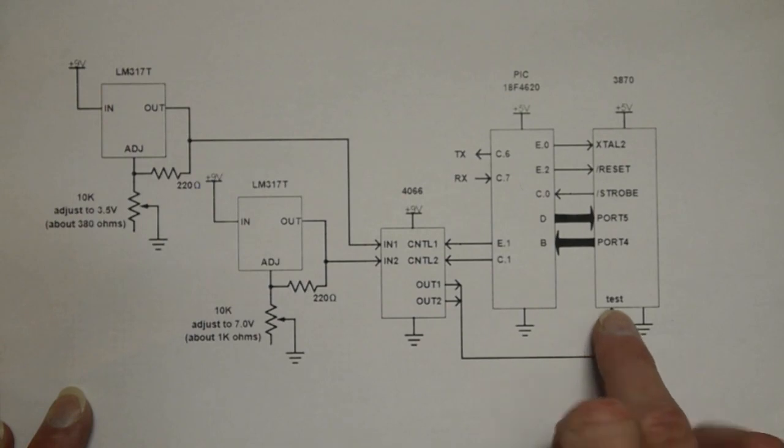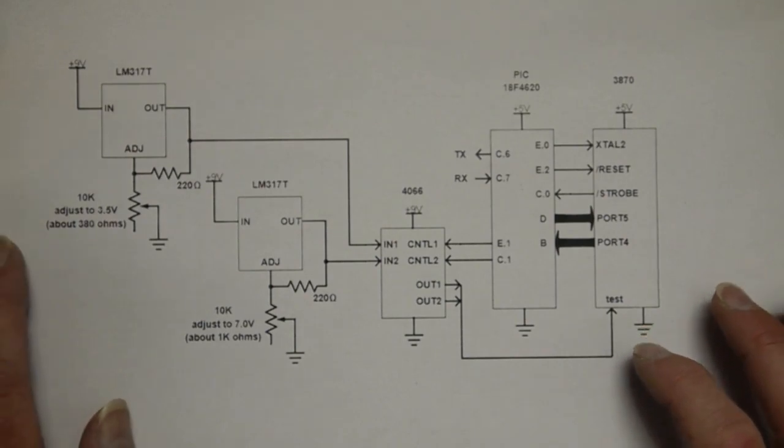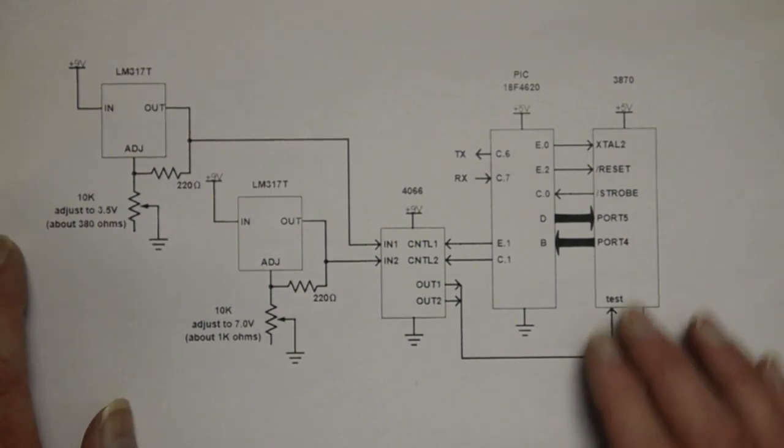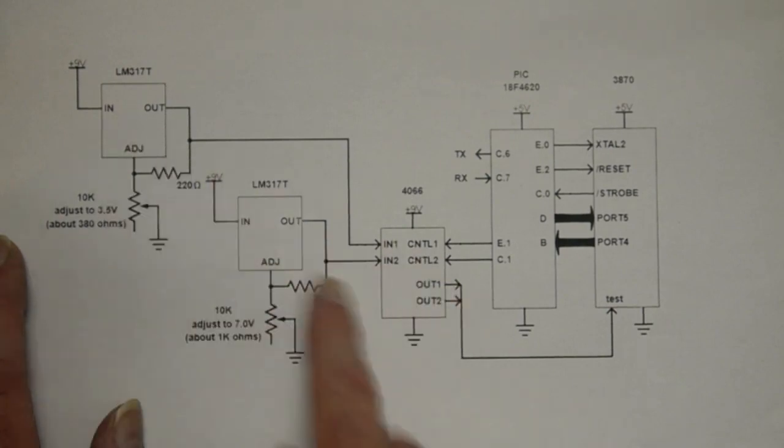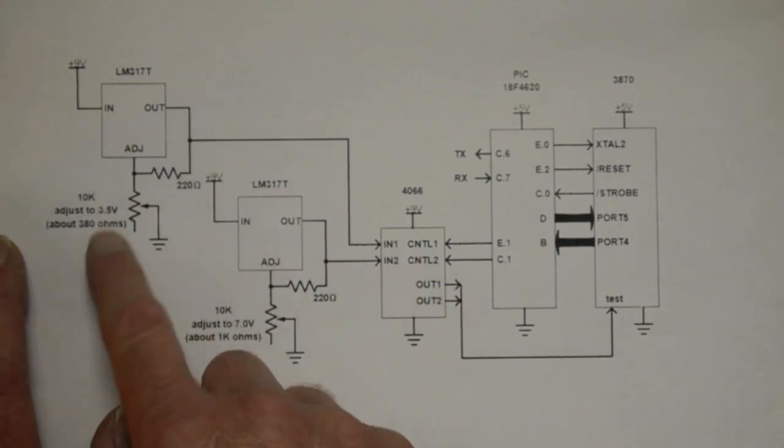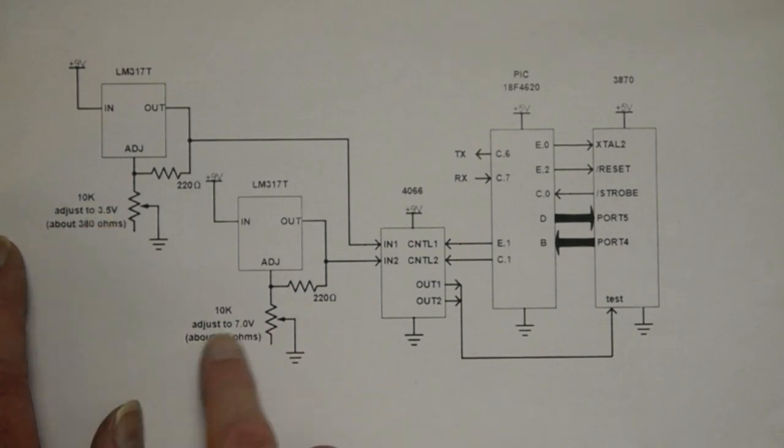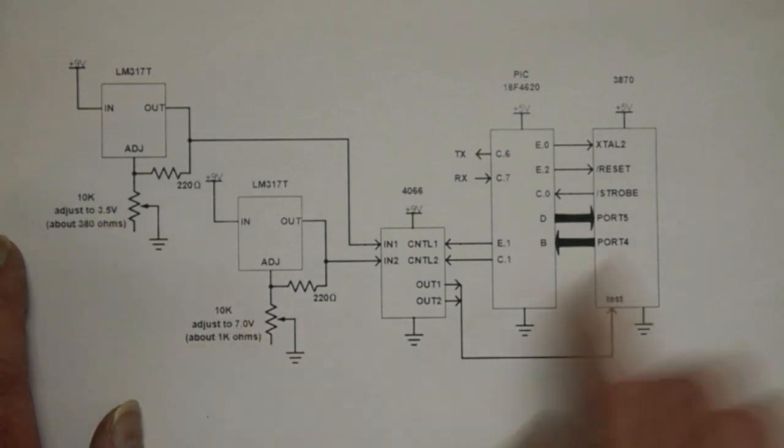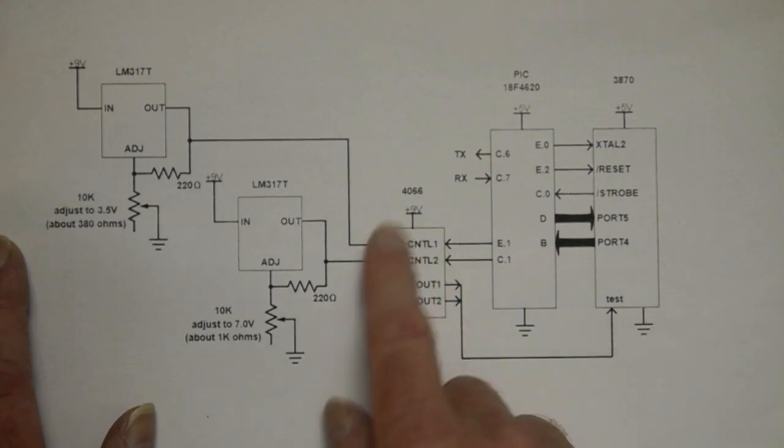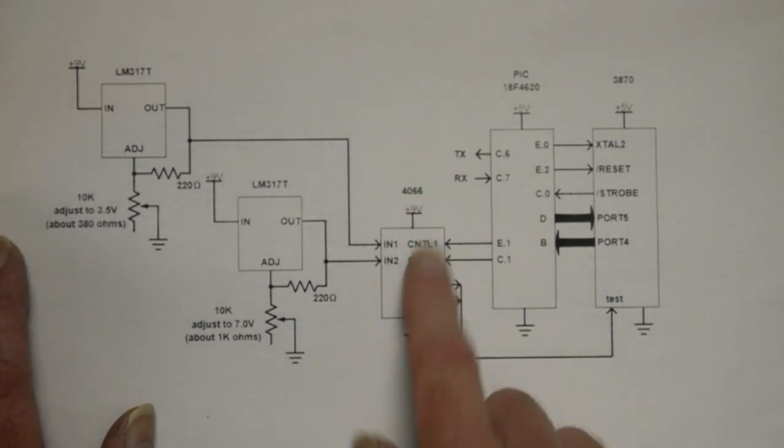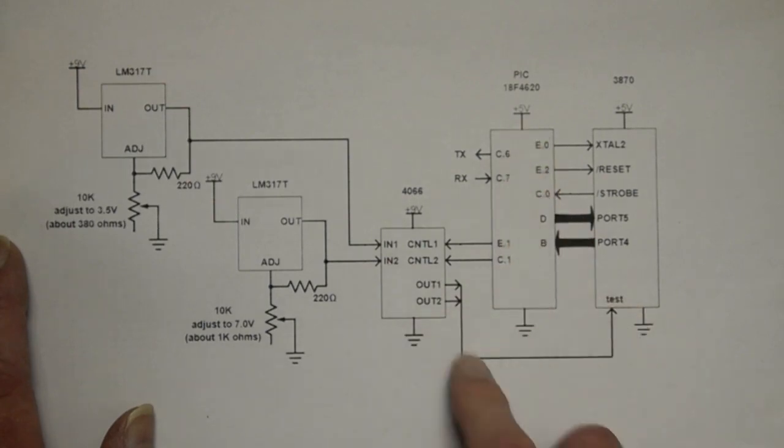The important line though is this one called Test. It turns out that if you apply different voltages to this test pin you can get the 3870 to do different things related to its ROM. The rest of the circuitry here is two regulators. One which you set up and adjust to three and a half volts, and one you set up and adjust to seven volts. Seven volts is more than the supply of this IC but that's fine. It's designed to handle that on this test pin. This is an analogue switch, the 4066, just a way for the PIC to select either three and a half volts or seven volts or leave it floating.